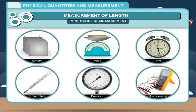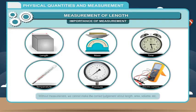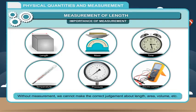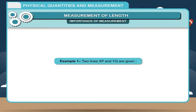Anything which is measurable is called a physical quantity. We measure each physical quantity in its own units by comparing it with a standard. Without measurement, we cannot make the correct judgment about length, area, volume, etc. An arbitrary estimate gives us wrong information about the dimensions of an object.